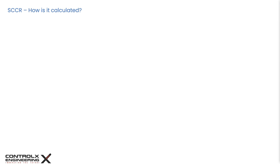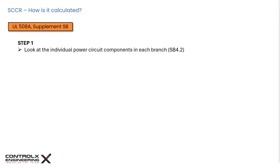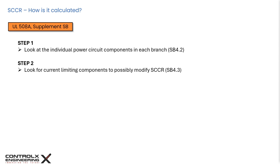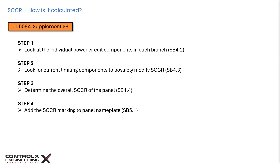SCCR is determined by analyzing the ratings of all components in an assembly, such as an industrial control panel. Each device — like breakers, contactors, and overloads — will have its own individual SCCR, and the overall panel SCCR is based on the weakest link: the component with the lowest rating. According to UL 508A Supplement SB, there are four basic steps: Step 1 — identify individual power circuit component SCCRs per SB 4.2; Step 2 — identify current limiting components per SB 4.3; Step 3 — determine the overall panel SCCR per SB 4.4; and Step 4 — add the SCCR marking to the panel nameplate per SB 5.1.